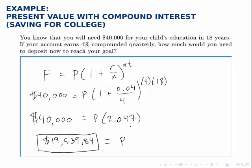So if I were to deposit $19,539.84 today, in 18 years, that account would hold $40,000, so more than double in that time.